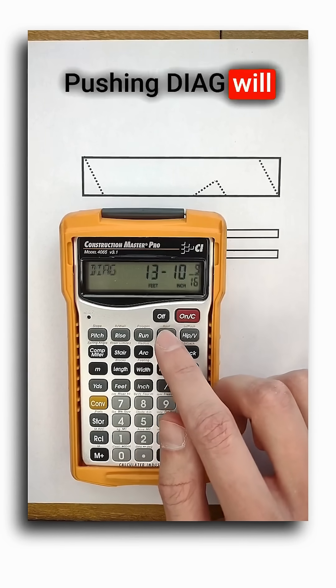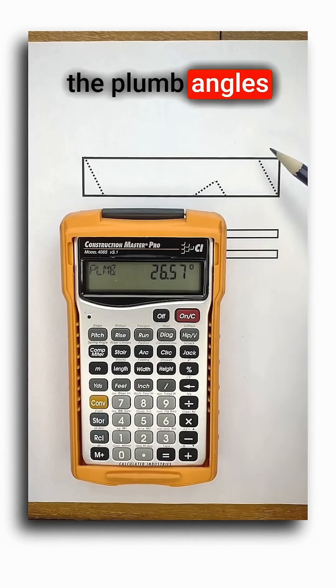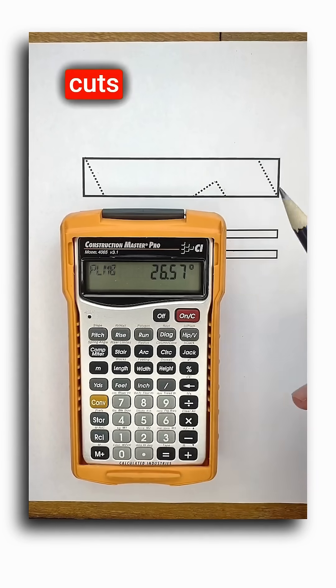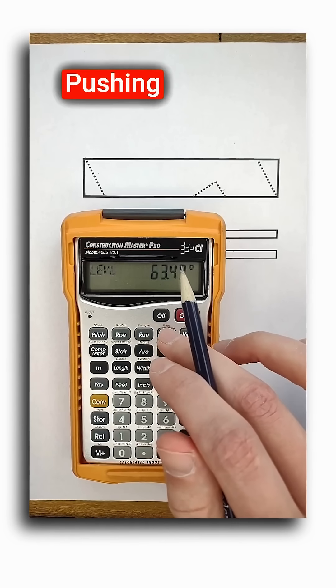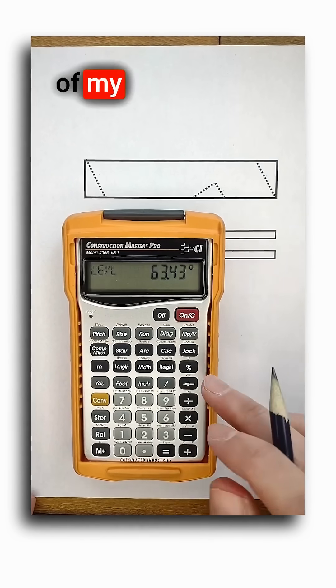Pushing diag will give me the length of any common rafters, and pushing it again will give me the plumb angle for all of my plumb cuts in the rafter. Pushing the diag button one more time will give me the level cut for the seat cut of my bird's mouth.